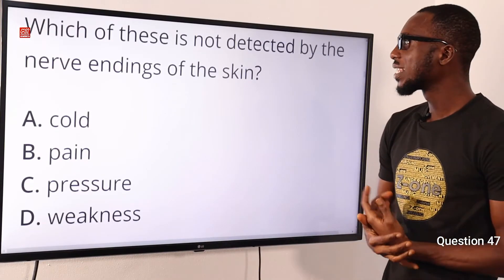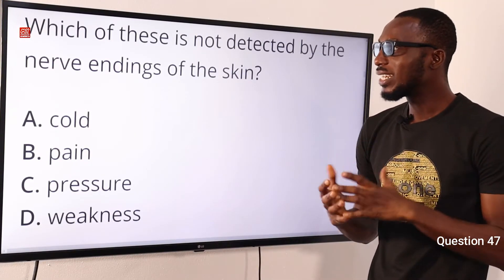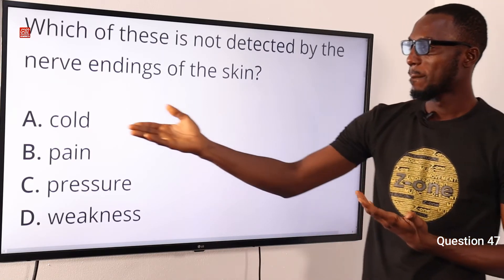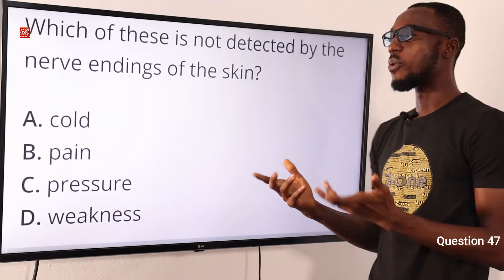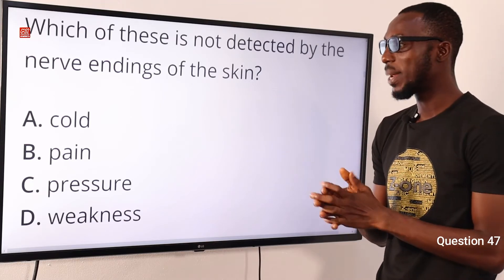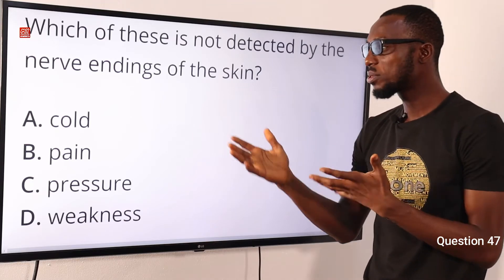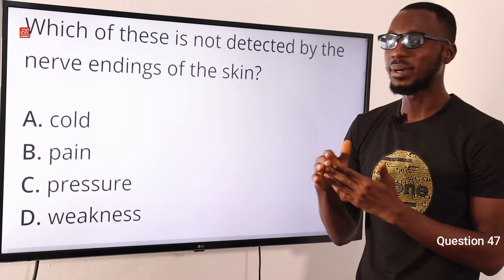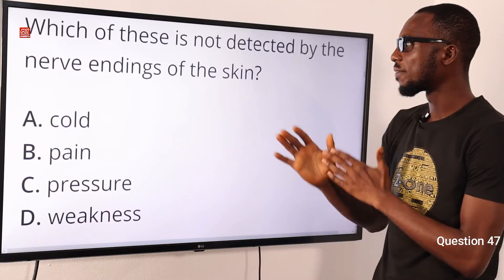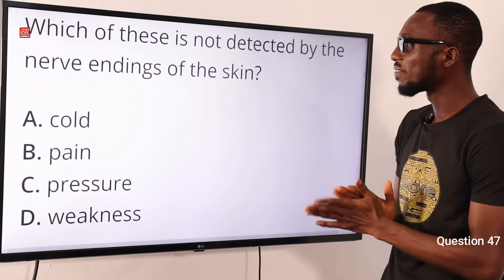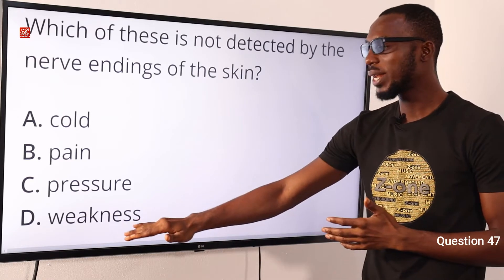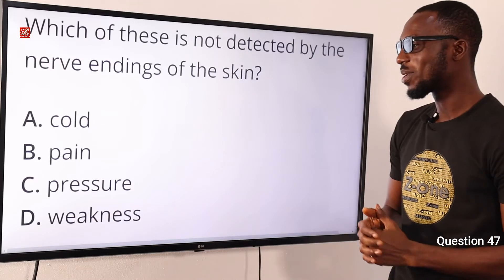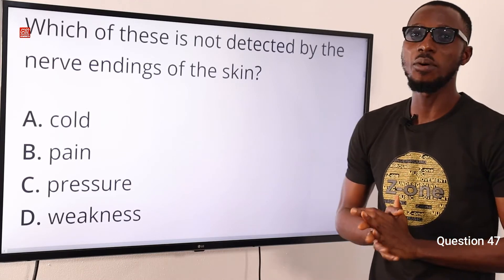Question 47. Which of these is not detected by the nerve endings of the skin? Cold or hot temperatures, pain sensation, and pressure are all felt or detected by the nerve endings of the skin. But when we talk about weakness — general body weakness — that is not detected by nerve endings. So the correct option is option D for weakness.